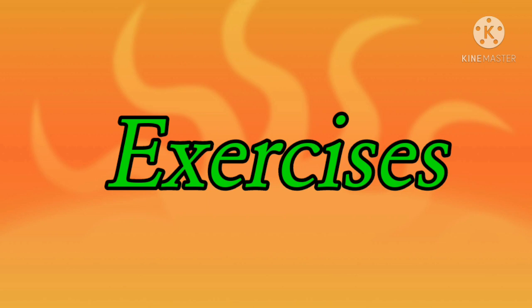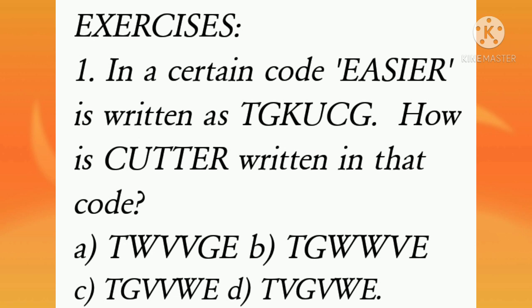I will give some exercises. You practice in your home. First question: In a certain code EASIER is written as T-G-K-U-C-G. How is CUTTER written in that code?